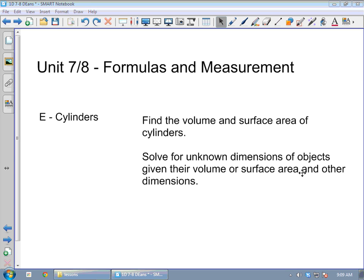This lesson covers the material from Unit 7/8, Formulas and Measurements. We're on to box E here, talking about cylinders. By the end of this lesson, we should be able to find the volume and surface area of cylinders and solve for unknown dimensions of objects given their volume or surface area and other dimensions. We'll do a question like that at the very end of the lesson.